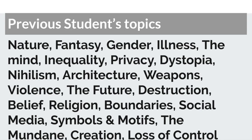Previous students sometimes think about what they want to do in the future. I've got architecture on there — we've had a few students who knew they wanted to do that. Or maybe you want to do something more personal to you or to do with a personal experience you've had. The list includes: nature, fantasy, gender, illness, the mind, inequality, privacy, dystopia, nihilism, architecture, weapons, violence, the future, destruction, belief, religion, boundaries, social media, symbols and motifs, the mundane, and creation and loss of control.